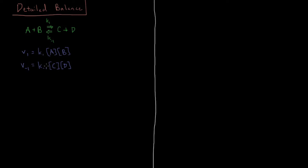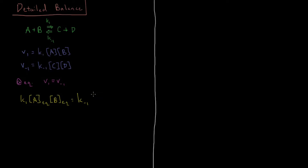So we have these two rate laws for the forward and reverse direction, and we know that at equilibrium the forward and reverse rates are equal to each other — V1 equals V-1 when equilibrium is achieved. This means that we take these two expressions and set them equal to each other at their equilibrium concentrations. So we have K1 times the equilibrium concentration of A times equilibrium concentration of B equals K-1 times the equilibrium concentration of C times equilibrium concentration of D.